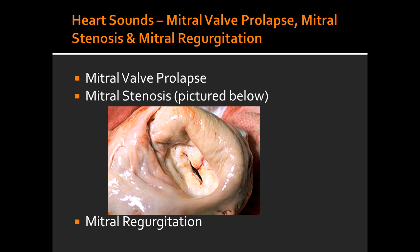In what group of patients will mitral regurgitation most commonly occur in? Mitral regurgitation most commonly occurs in patients that have suffered from an MI due to papillary muscle effect, as well as patients that have suffered from acute rheumatic fever and endocarditis. The characteristic sound in mitral regurgitation is a holosystolic murmur that is transmitted to the axilla.